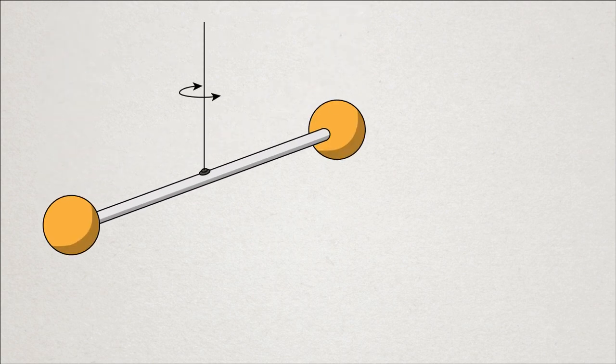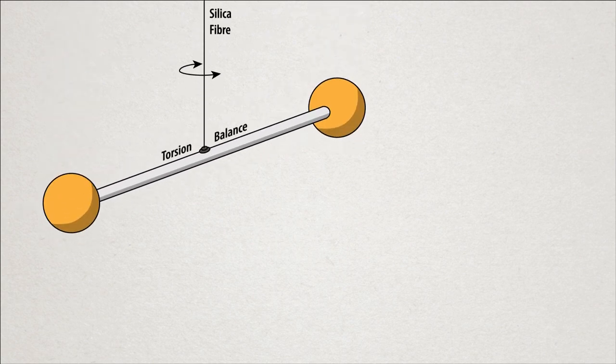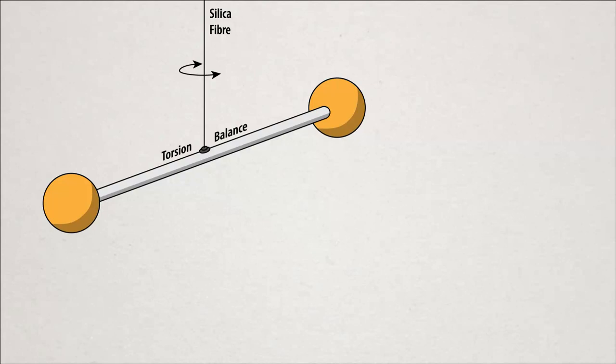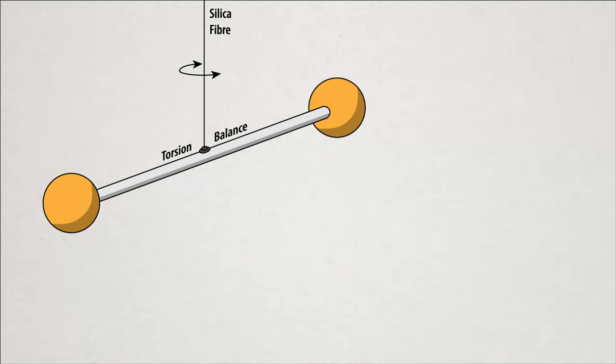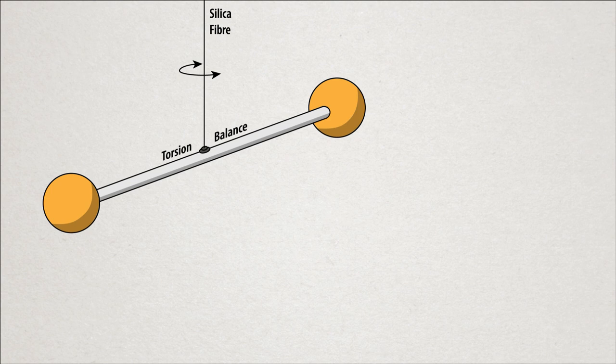This latest measurement is much smaller than the original. Rather than lead, the scientists used gold for the masses, and all the masses are relatively equal, approximately 90 milligrams. And instead of a telescope used to manually read off the twist of the torsion balance, a laser is reflected off a mirror and onto a photodiode.